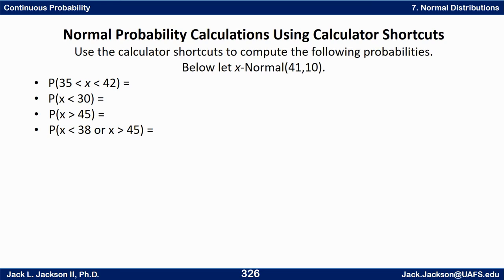All of these we're going to let X be normal with mean 41 and standard deviation 10. Use your calculator shortcuts. Go ahead work these out, write them down, press pause, work them out and then come back when you're done to check your work.